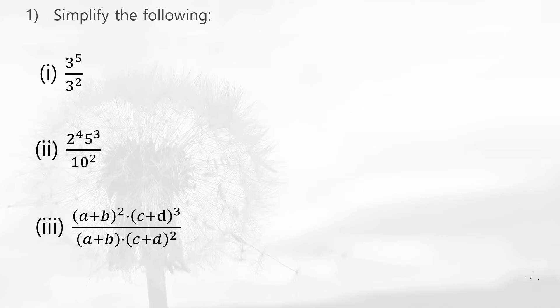Let's start with question number 1: Simplify the following. The first question is 3 to the power 5 divided by 3 to the power 2. When the bases are the same and we have division, we write the base and subtract the powers. That means 3 to the power 5 minus 2, which gives 3 to the power 3.